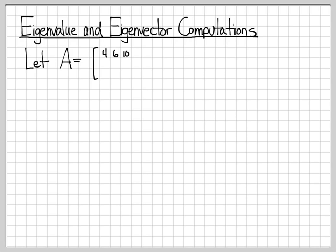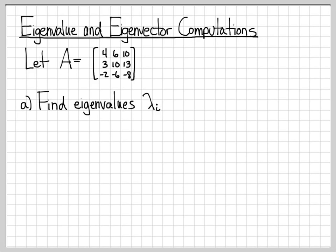We're going to work with matrix A. The matrix A is [4, 6, 10; 3, 10, 13; -2, -6, -8]. We're going to first compute the eigenvalues of matrix A, and we denote the eigenvalues as lambda sub i. That's the notation commonly used for eigenvalues — each one is a lambda value.